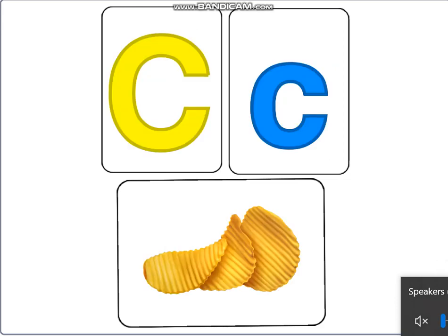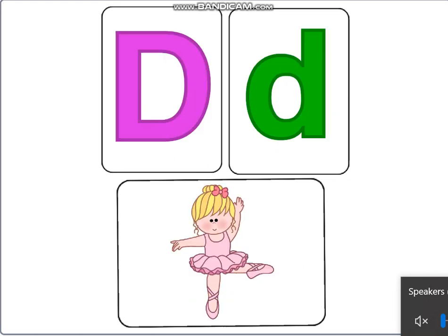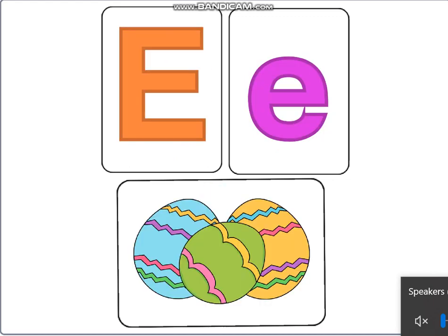D for Dancing Doll. E for Easter Egg. That was A, B, C, D, E.